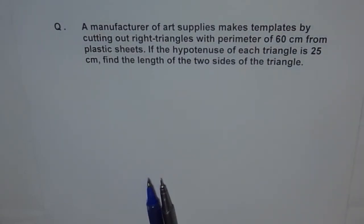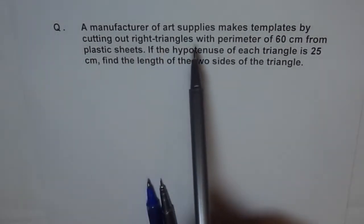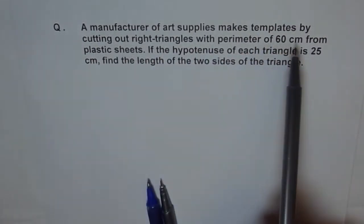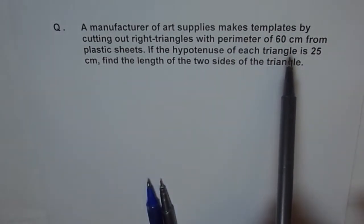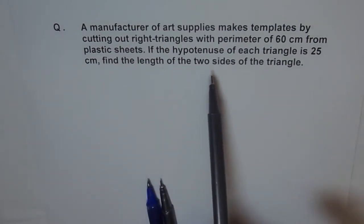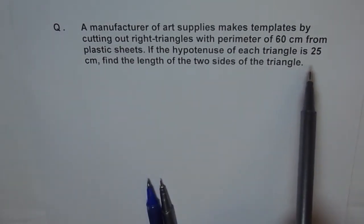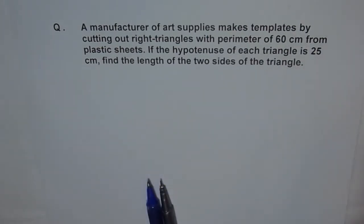Here is another problem. Let's first read it properly and then try to solve it. The first step is always to read the problem and understand it. A manufacturer of art supplies makes templates by cutting out right triangles with a perimeter of 60 cm from plastic sheets. If the hypotenuse of each triangle is 25 cm, find the length of the two sides of the triangle.